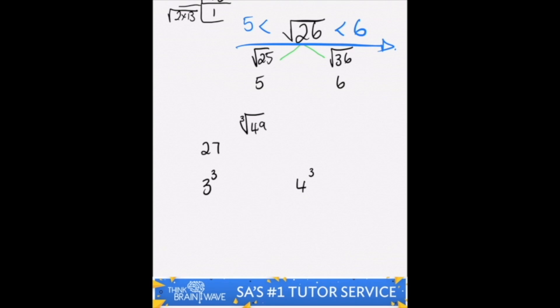So let's try 4 cubed. 4 cubed is 4 times 4 is 16 times 4 is 64. 49 lies between 27 and 64. Therefore the cube root of 49 is less than 4 and greater than 3.